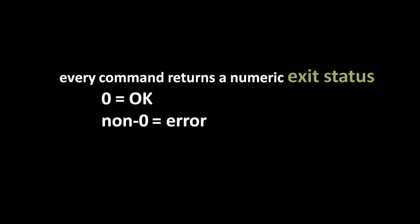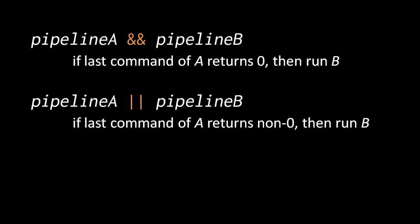As a user of the shell, what can you do with exit statuses? One thing is to connect two pipelines with a double ampersand or a double pipe symbol. With the double ampersand, the shell first runs pipeline A, and if the last command of A returns exit status 0, it then runs pipeline B. If A returns something other than 0, pipeline B is skipped. The double pipe works the same but inverts the logic: pipeline B only runs if the last command of A returns something other than 0; if it returns 0, pipeline B is skipped.